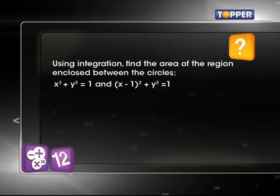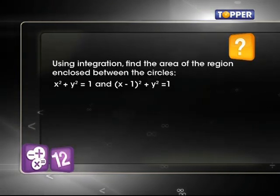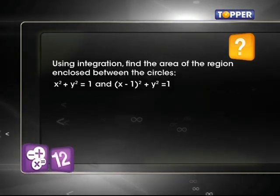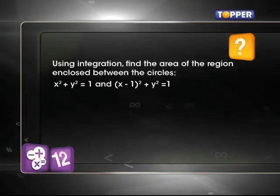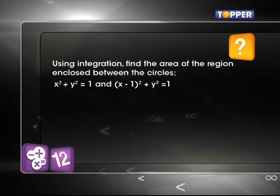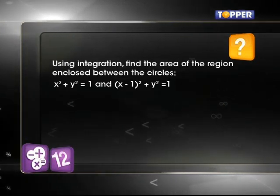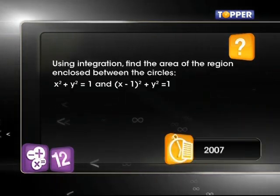This is also a 6 marks question based on finding the area between two given circles. x² + y² = 1 and (x-1)² + y² = 1. It was asked in 2007 board examination.